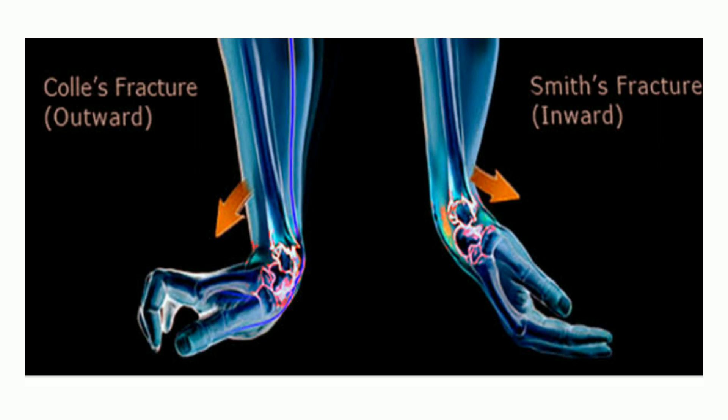Normally the distal articular surface faces ventrally. If after fracture it faces dorsally or becomes neutral, a dorsal tilt has occurred. Similarly, a lateral tilt can be detected on an anterior-posterior X-ray. Normally the distal articular surface faces medially; if it faces laterally or becomes horizontal, a lateral tilt has occurred.